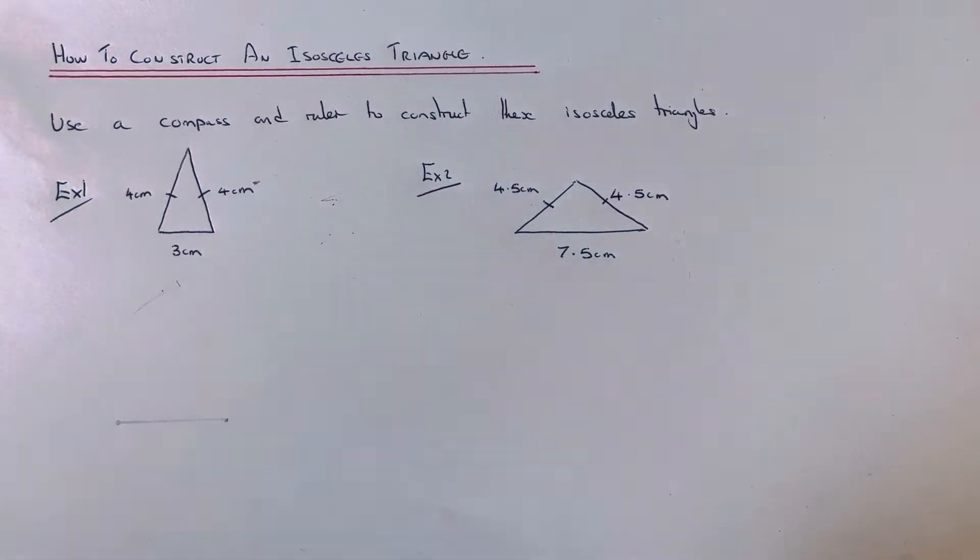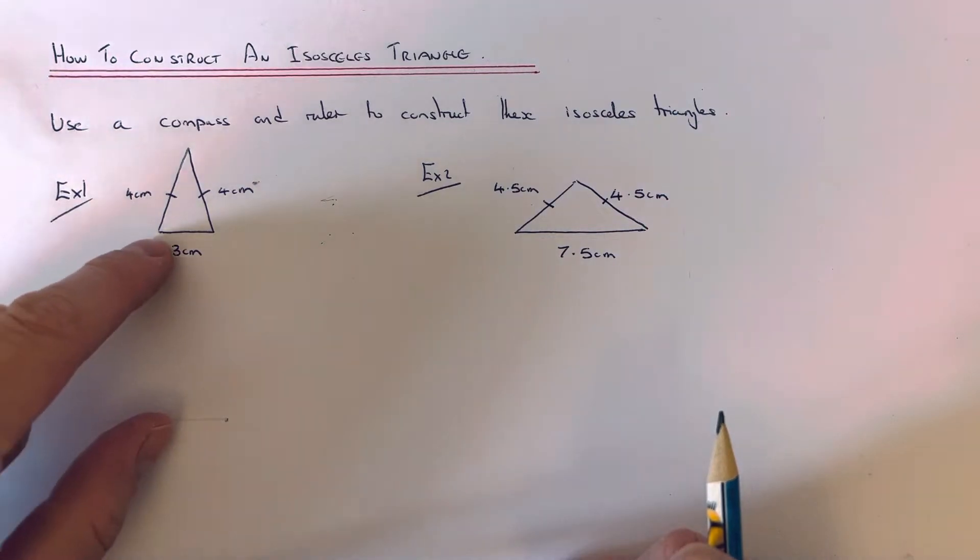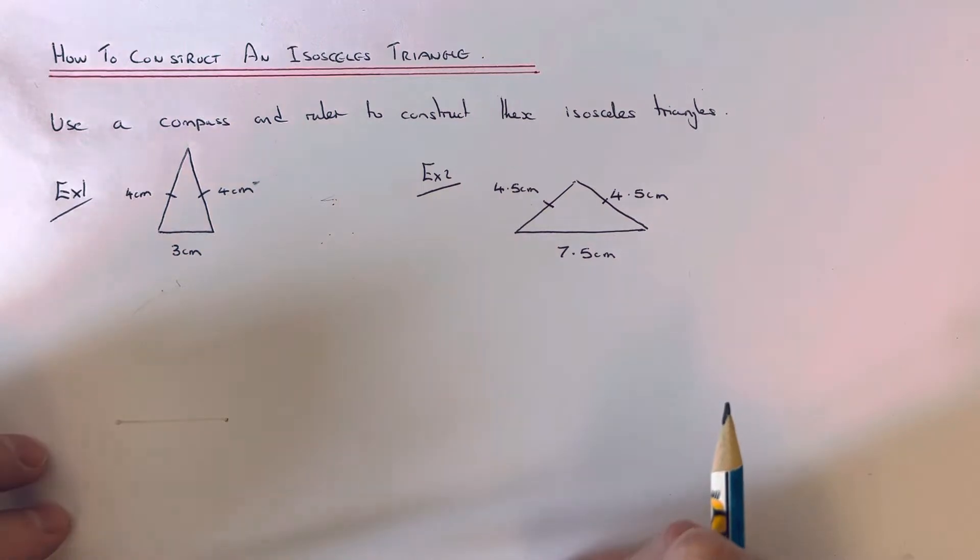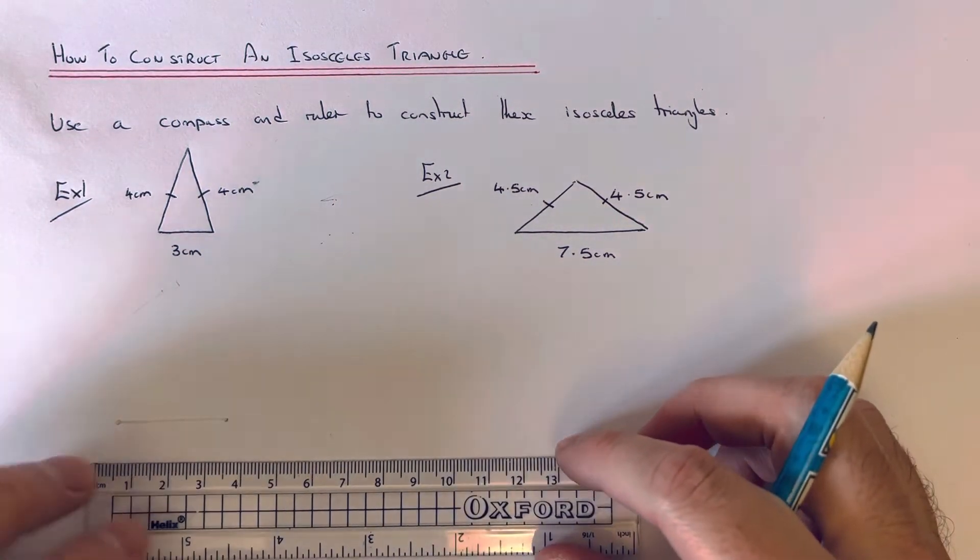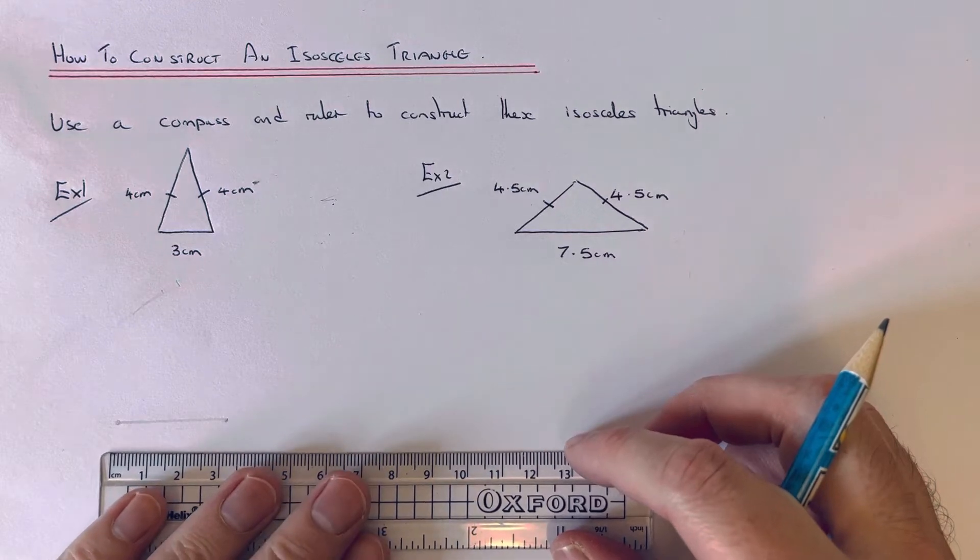Let's start with example one. We've got a bottom edge of 3 centimeters and the two sloping edges are 4 centimeters. Get your ruler to begin with and draw the bottom side, which is 3 centimeters long.